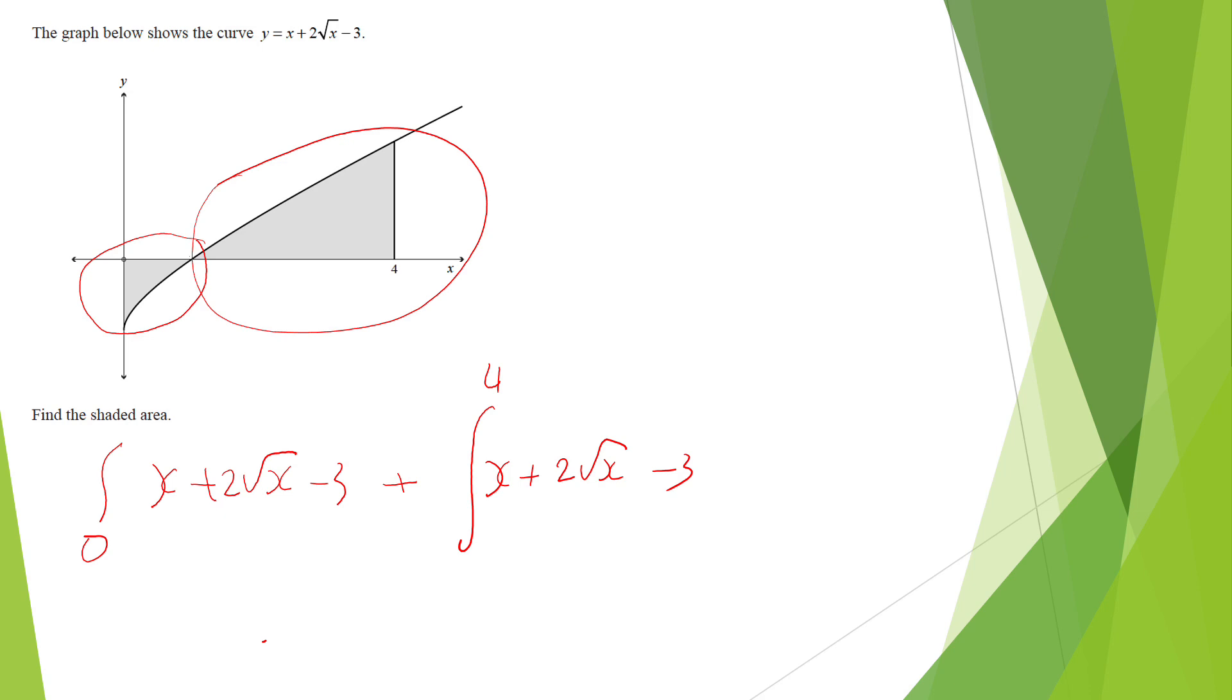You must first find the x-intercept of this curve. So in your graphic calculator, you can put this equation, and substitute instead of y, 0, and solve the equation. You will end up with, using graphs, this value as 1. So therefore, 0 to 1, 1 to 4.